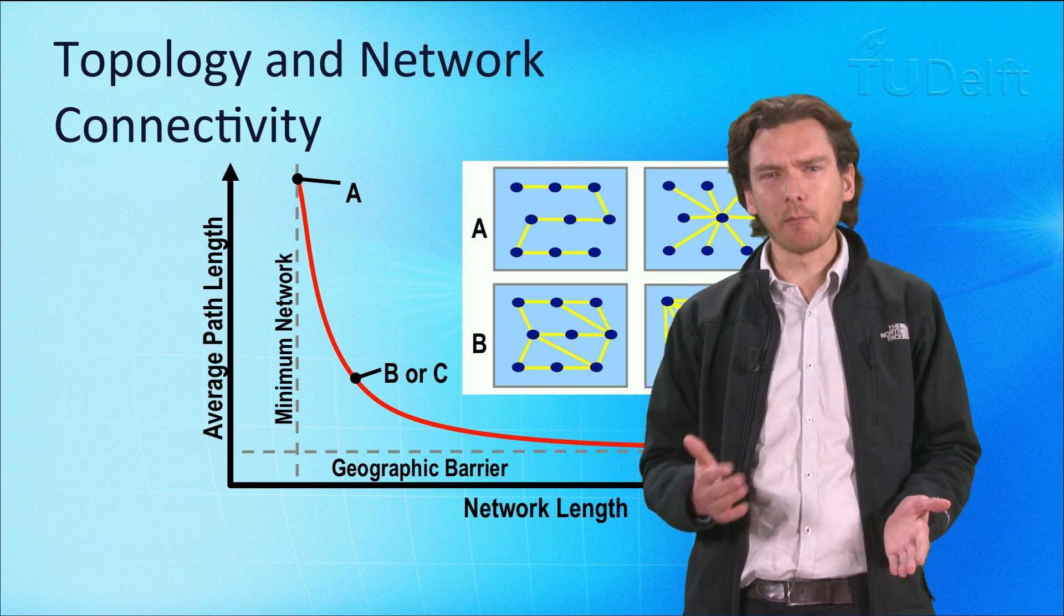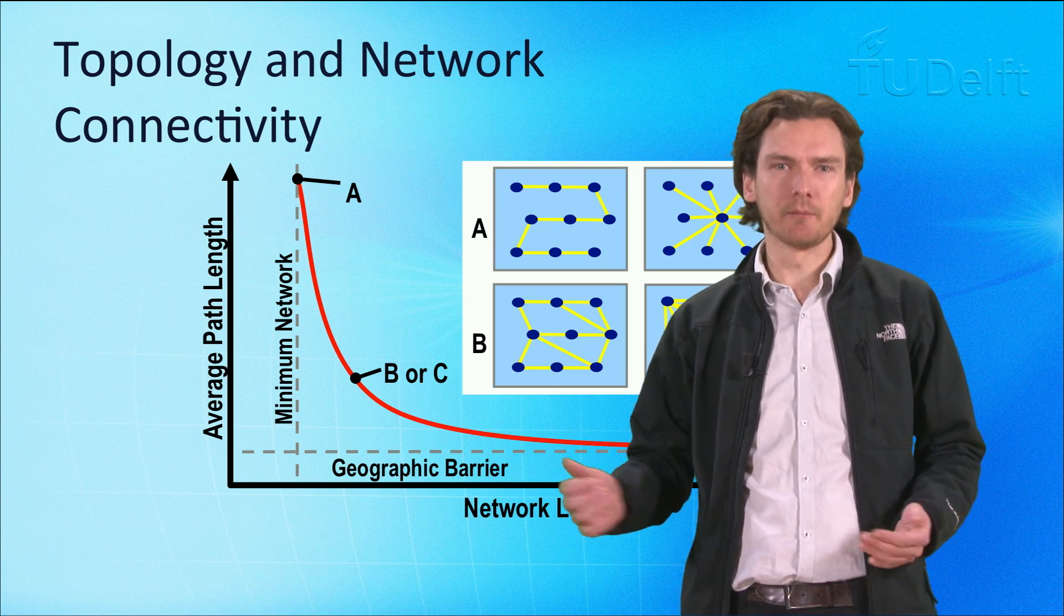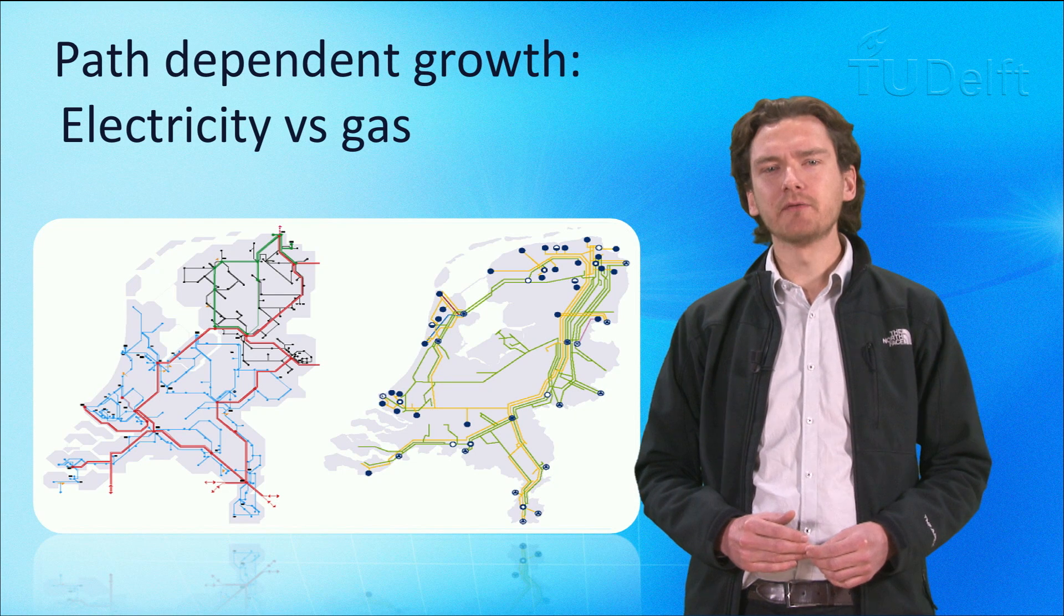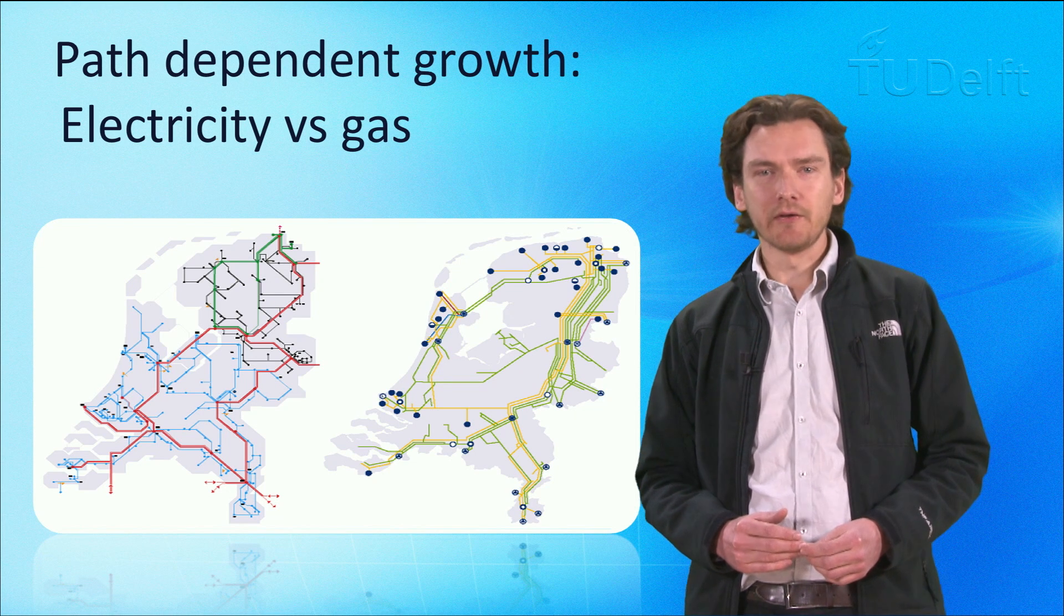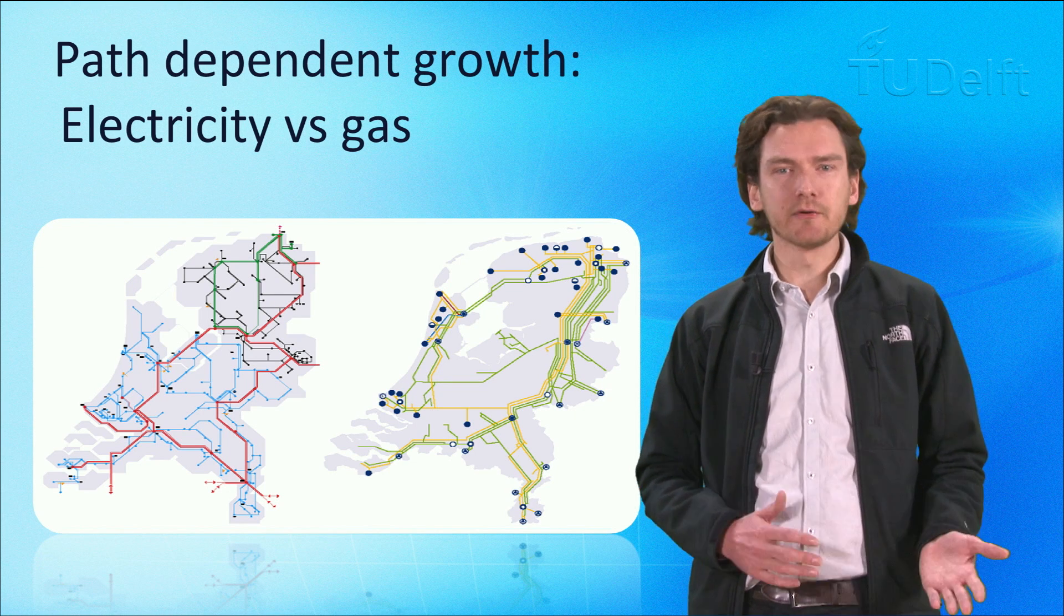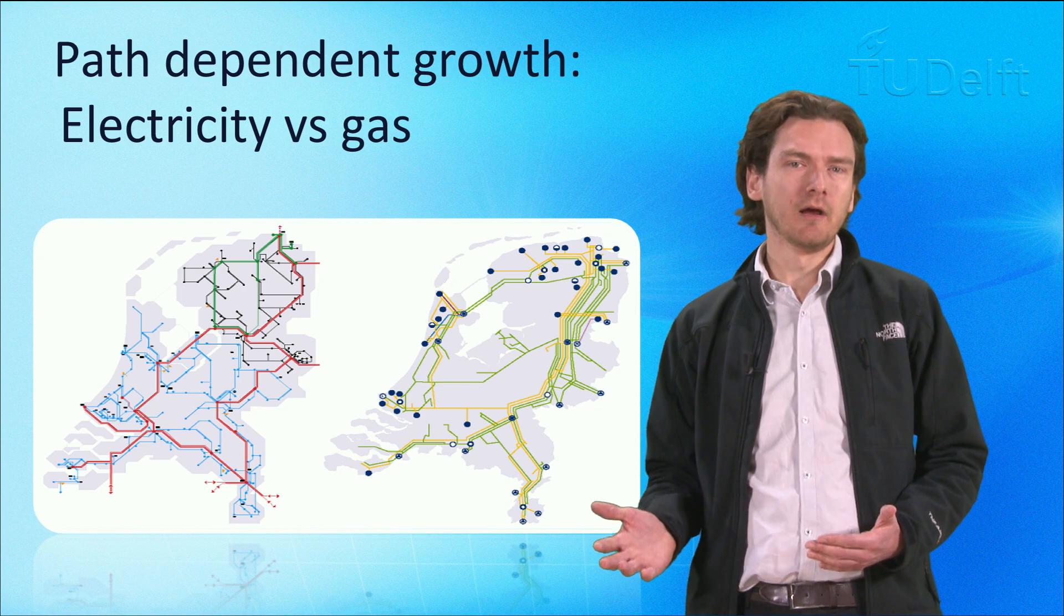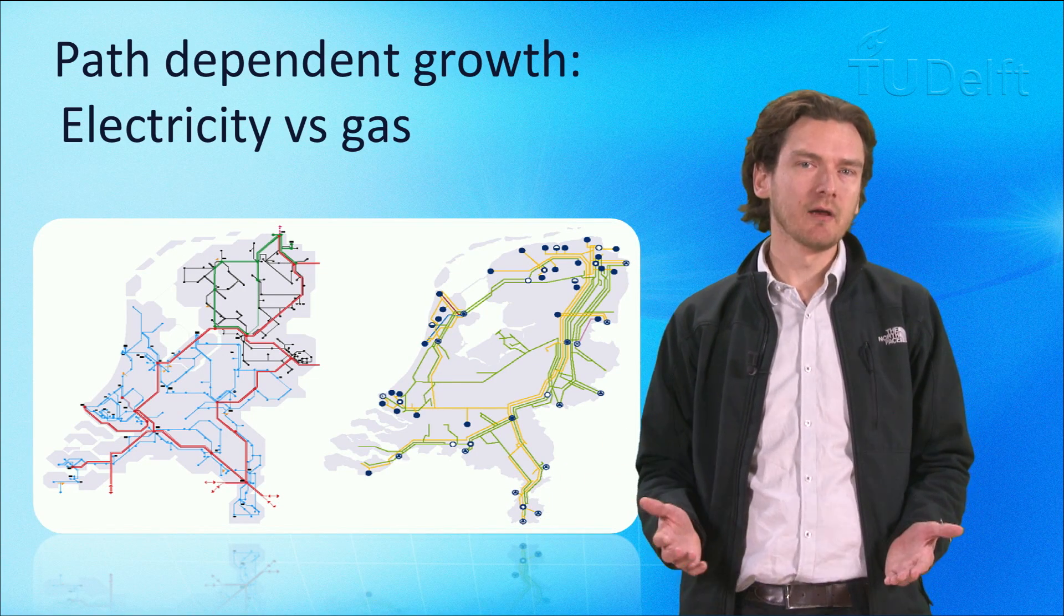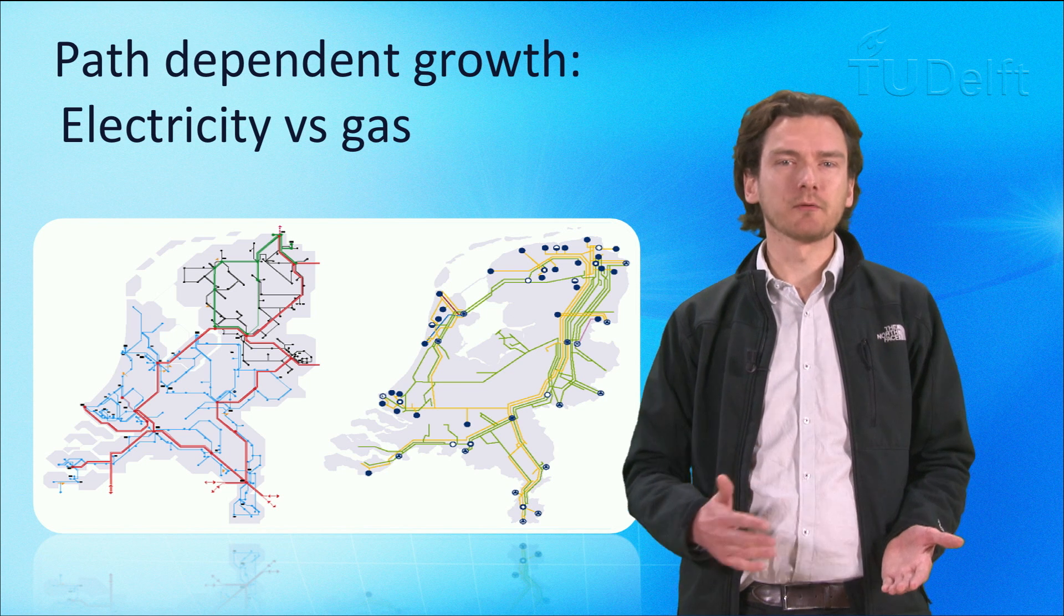With the growth of networks, we can often see a type of path dependency based on how they are formed. In the case of the electricity grid, this started with individual cities having their own power plant. The grid first expanded to connect cities to suburbs, and then cities to other cities. Eventually this spread so that provinces were linked up, and now in Europe we are increasing the interconnections between countries.